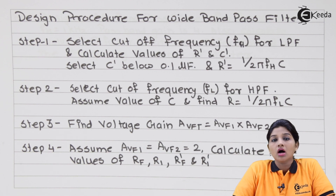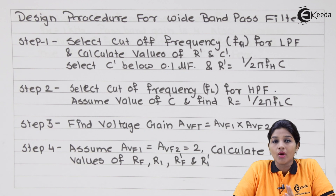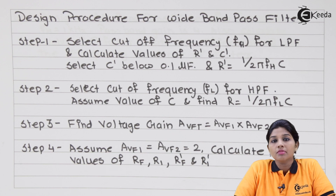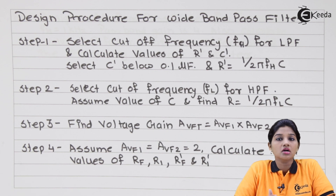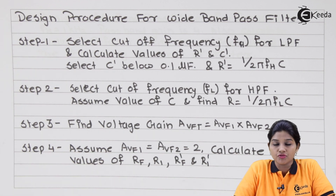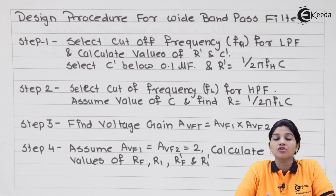The band pass filter is divided into two types: wide band pass filter and narrow band pass filter. This classification is based on the value of Q. If the value of Q is less than 10, the filter comes under the category of wide band pass filter. If the value of Q is greater than 10, the filter comes under the category of narrow band pass filter.